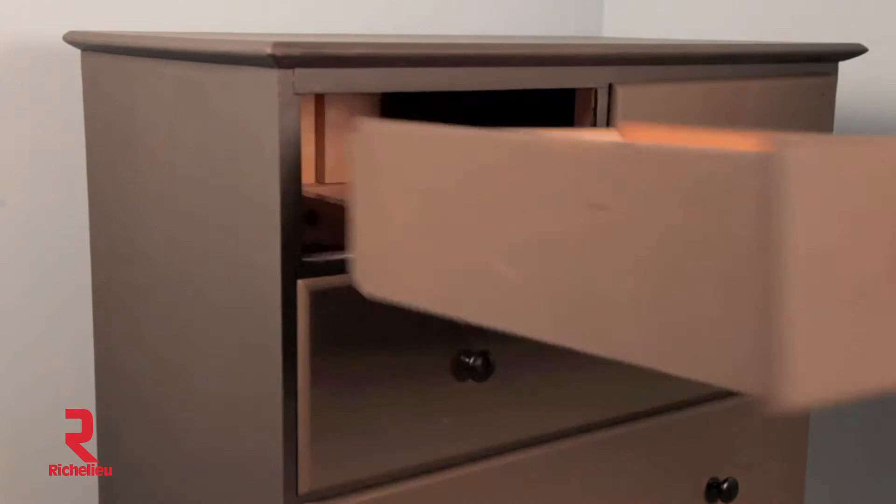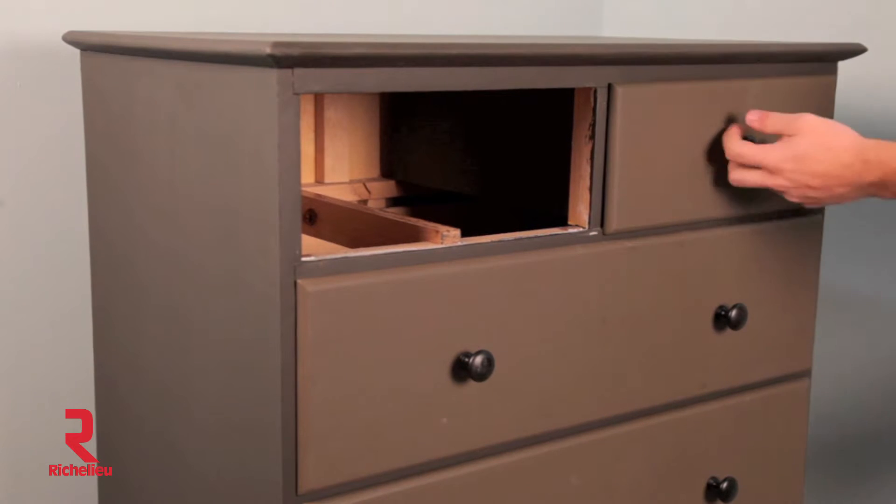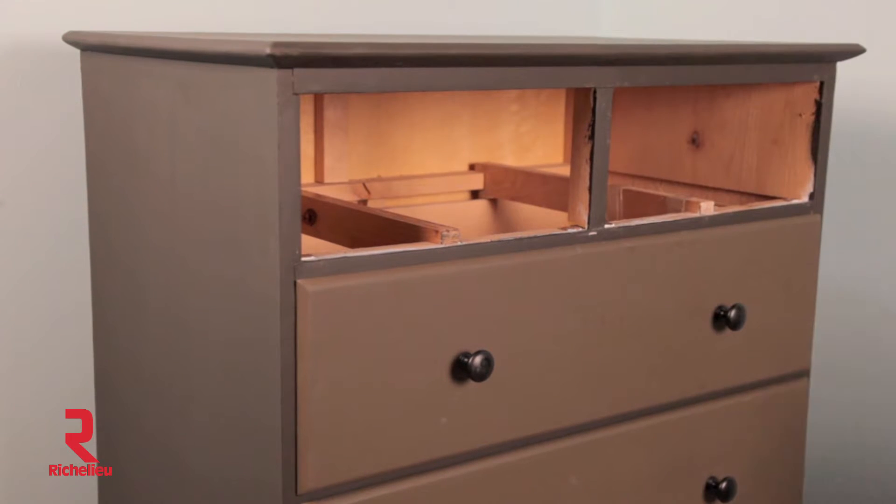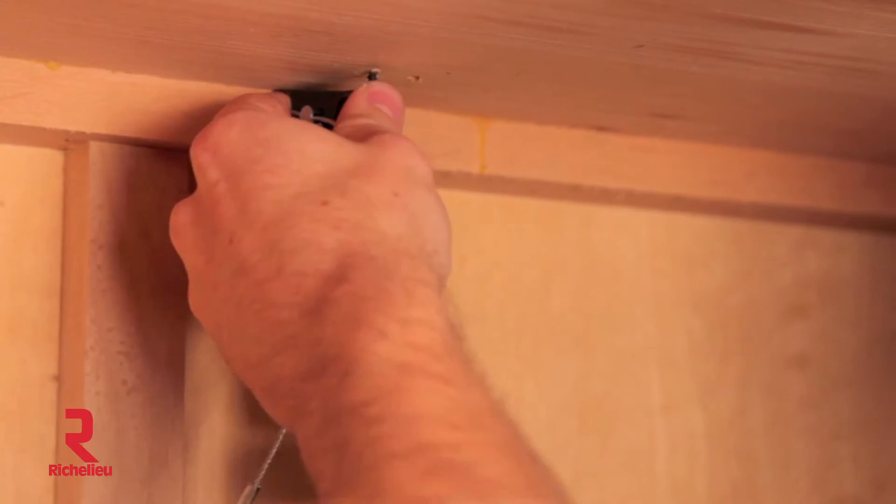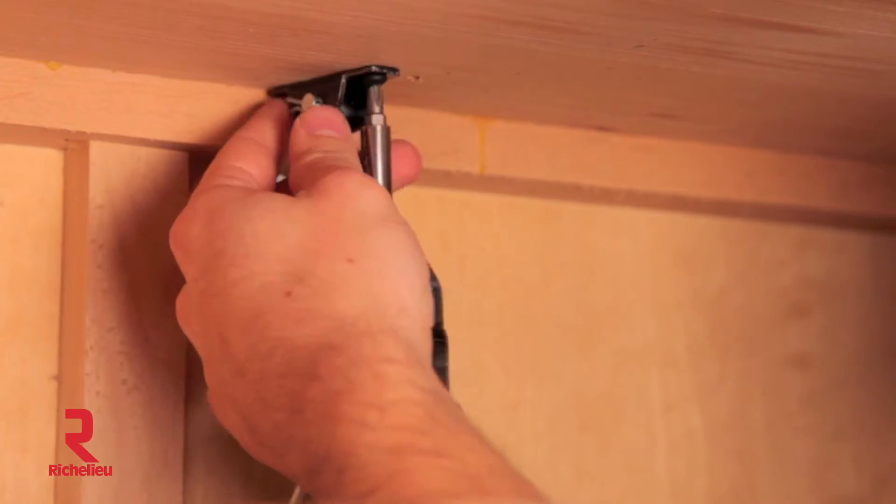Remove top drawers from the furniture piece if needed. Using the self-drilling 5 eighths inch screws, install bracket to the underside of the top of the furniture. Make sure the top of the furniture is at least 5 eighths inch thick.